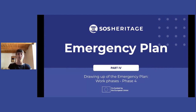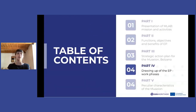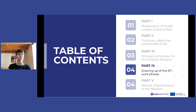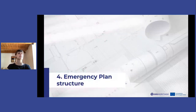Hello everyone and welcome back to this lesson dedicated to emergency plans for cultural heritage institutions. In this part we are talking about the different work phases for the drawing up of an emergency plan for a museum. We have already seen the first phase — gathering information and documentation — phase two, the flow analysis of the museum, and phase three, the risk analysis. In this phase we will see the actual drawing up of an emergency plan.